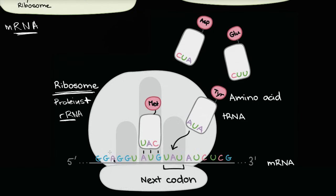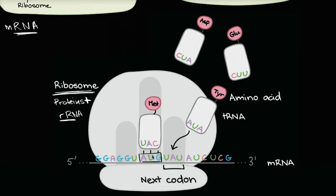The ribosome is going to travel along the mRNA from the five prime end to the three prime end, reading it and turning that information into a sequence of amino acids. Every three nucleotides we call a codon. So the next three nucleotides is a codon, this is a codon, this is a codon. The information is actually encoded in the nitrogenous bases.